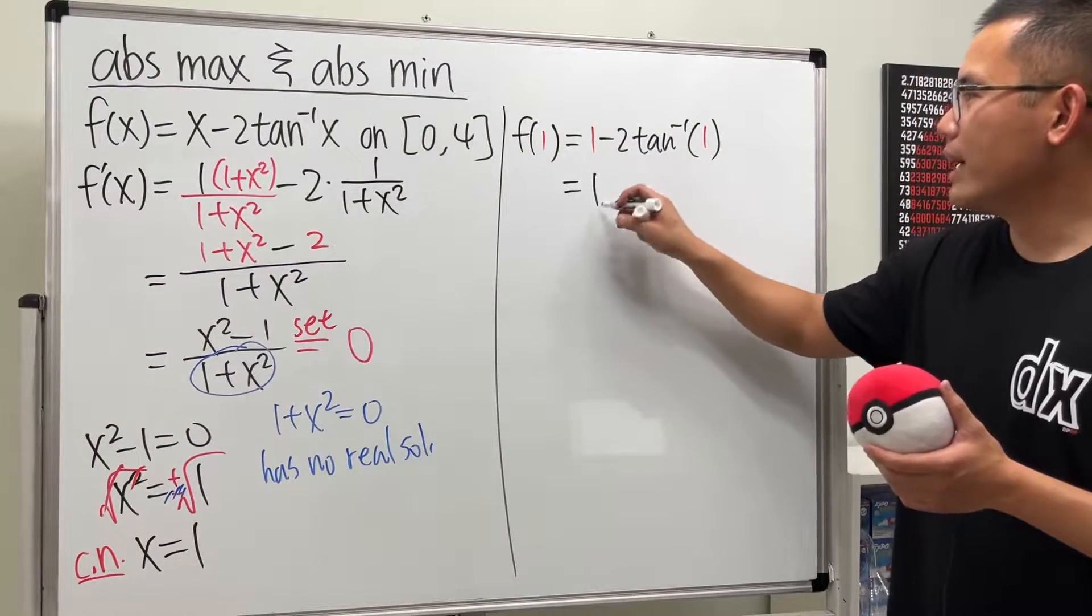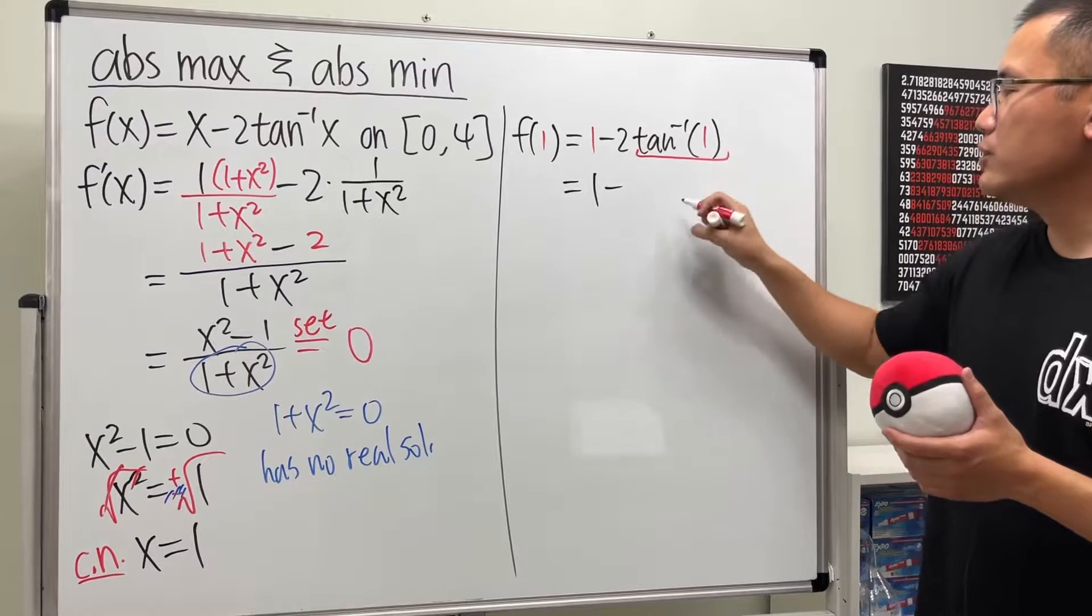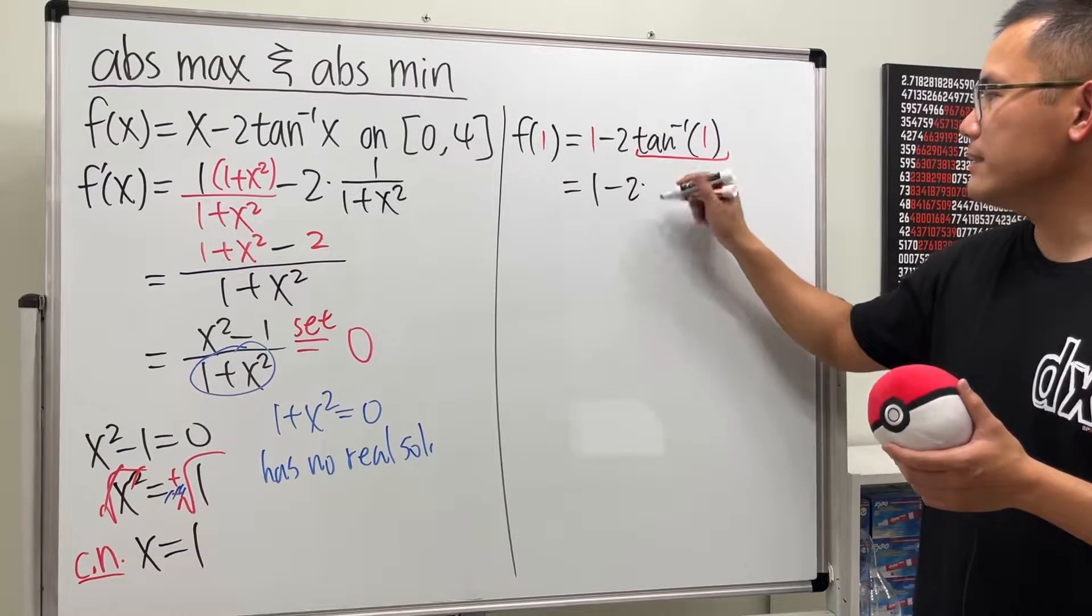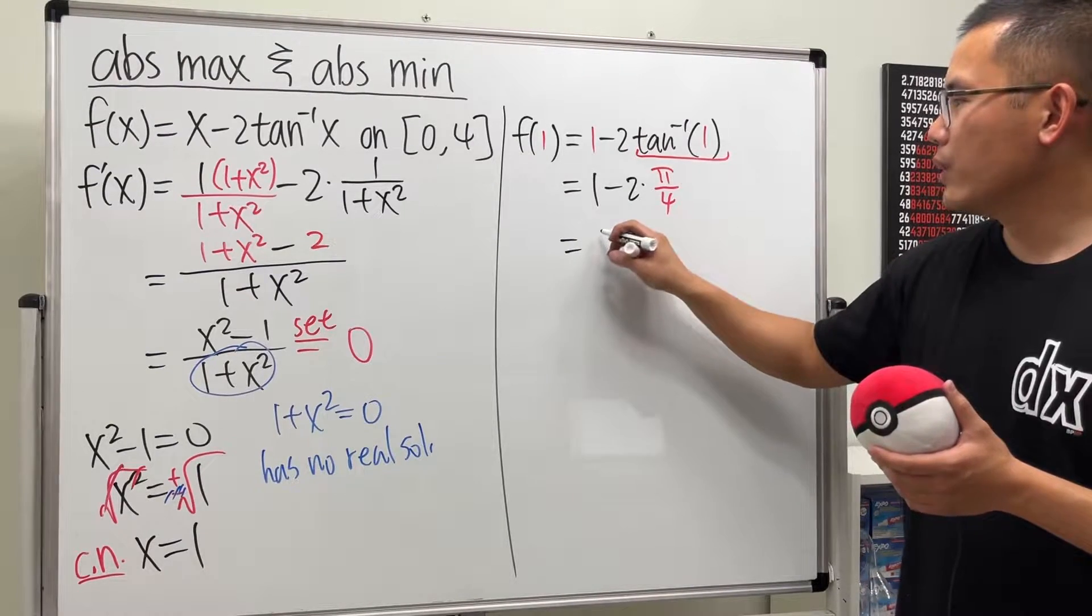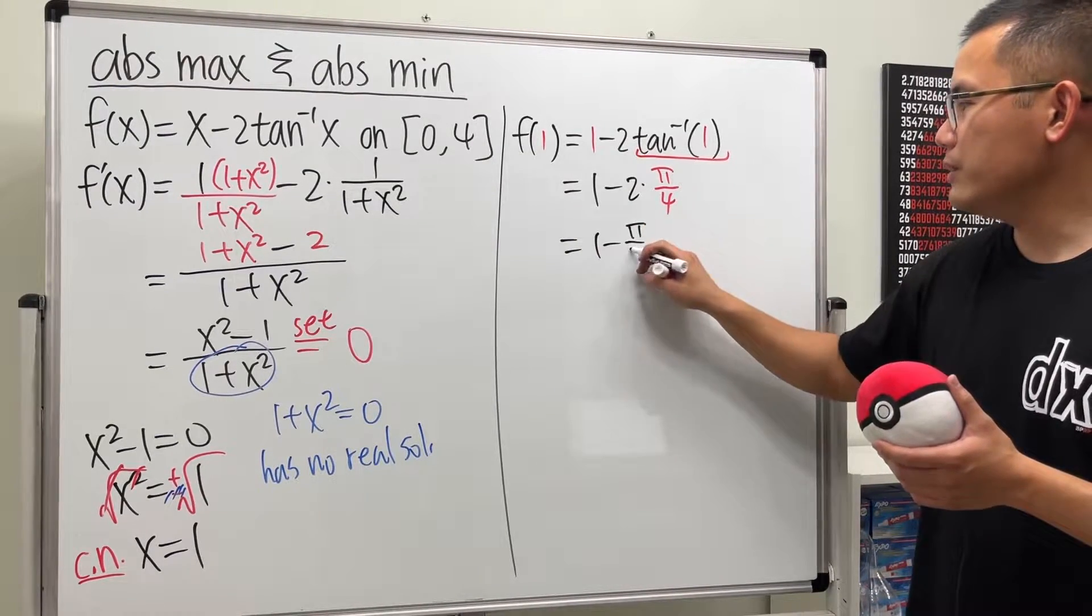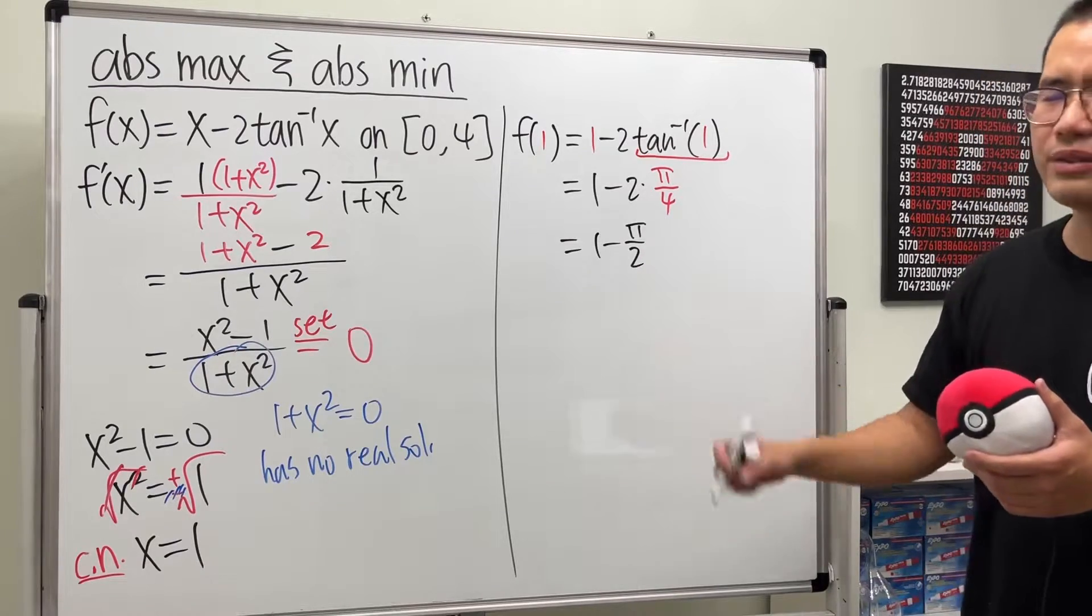So here, this is 1 minus inverse tangent of 1 is pi over 4. But we have a 2 in front. So we have this. Reduce. We get 1 minus pi over 2. This is okay. You don't have to combine them.